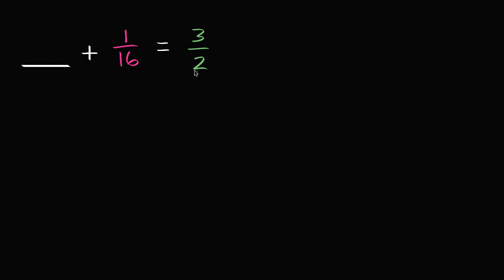When we think about a common denominator, we look at a common multiple of the denominators. Lucky for us, 16 is already divisible by 2. It's divisible by 16 as well, so 16 is the least common multiple of 16 and 2. There are other common multiples, but the smallest one is 16, which is also divisible by 2. So let's rewrite both of these fractions with 16 as their denominator. This one obviously already has it.